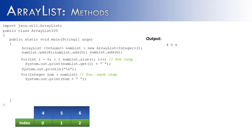Next we're going to use a for-each loop, which is going to iterate through all of the elements inside of the ArrayList. The first element is the data type, which is Integer from the ArrayList. 'num' could be any name — it just represents the elements inside of the ArrayList — followed by a colon, and then numList, which is the name of the data structure we're traversing. Inside the loop, instead of saying numList.get(i), we just use num, which represents the elements inside of the ArrayList.